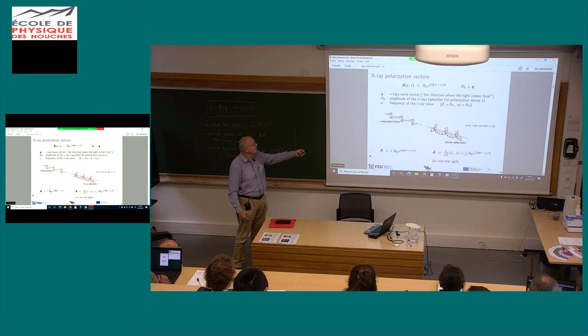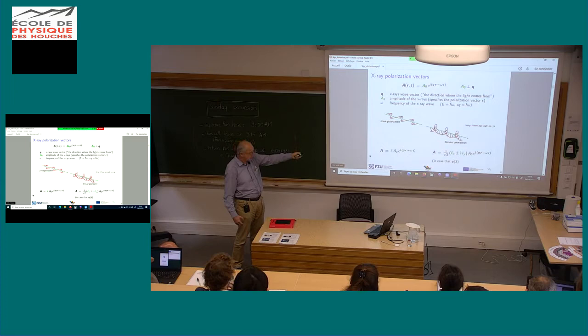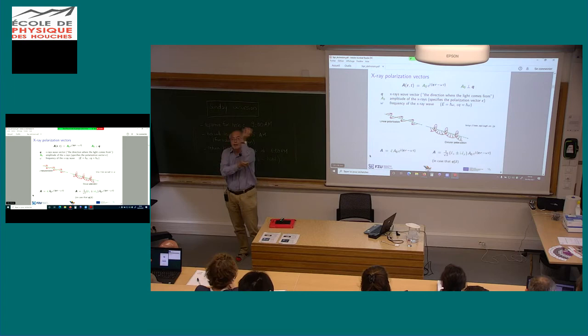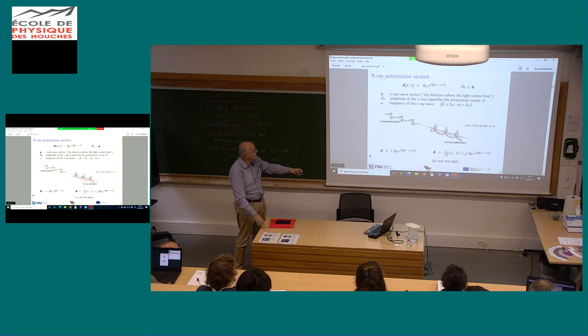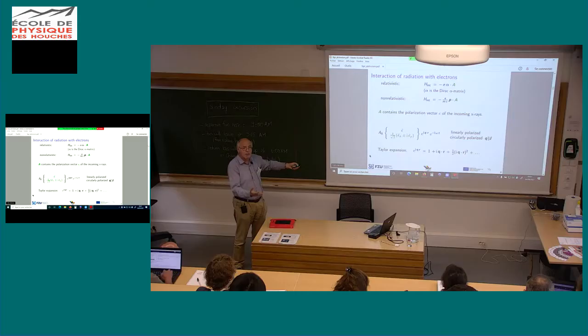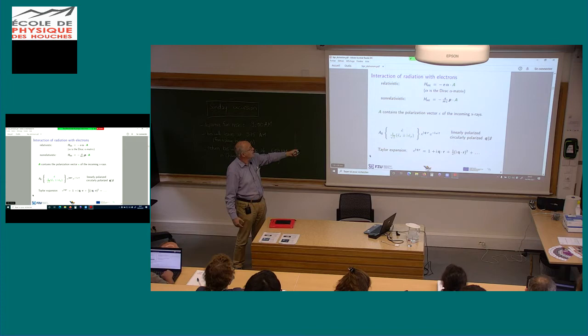Light is polarized. The wave function is described by a certain form, and the amplitude is perpendicular to the direction of propagation of the waves. Light can be polarized linearly — in that case we have the polarization vector — or it can be polarized circularly, left or right. In that case the wave vector can be written as a combination of the X and Y components, assuming the direction of the incoming rays is parallel to Z. What matters is the interaction of this radiation with electrons, described by the relativistic or non-relativistic interaction Hamiltonian.